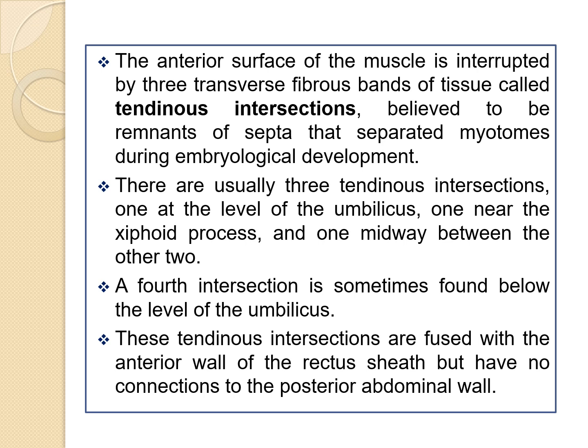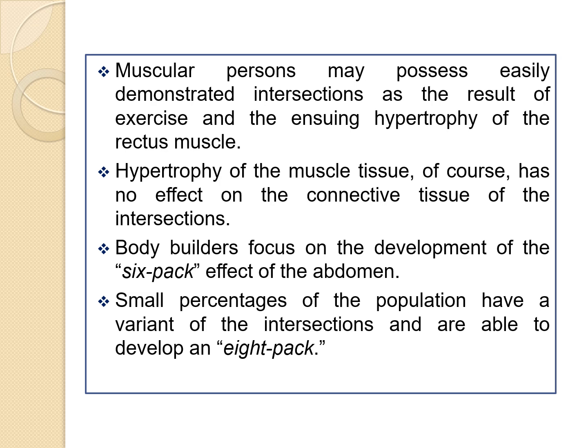These tendinous intersections are fused with the anterior wall of the rectus sheath but have no connections to the posterior abdominal wall. They are particularly demonstrated on muscular persons, who may possess easily visible intersections as a result of exercise and hypertrophy of the rectus muscle. This hypertrophy does not affect the connective tissue of the intersections, and bodybuilders focus on the development of the six-pack effect. In a small percentage of the population, a variant allows them to develop even an eight-pack.